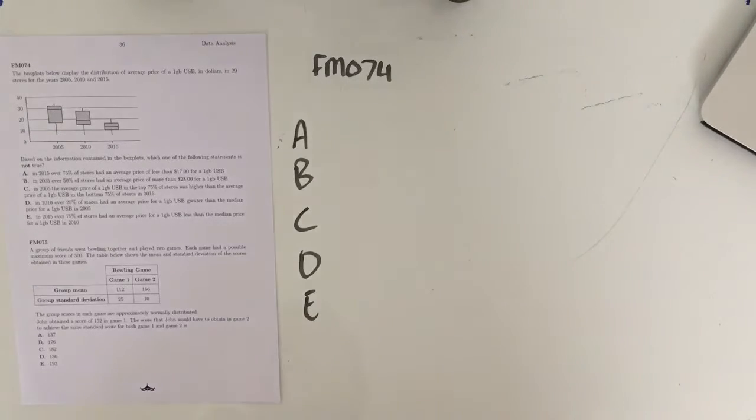Hey guys, welcome to question FM74 of the FurtherMass Fortify study guide. So the question reads as follows. The box plots below display the distribution of average price of a 1GB USB in dollars in 29 stores for the years 2005, 2010 and 2015.